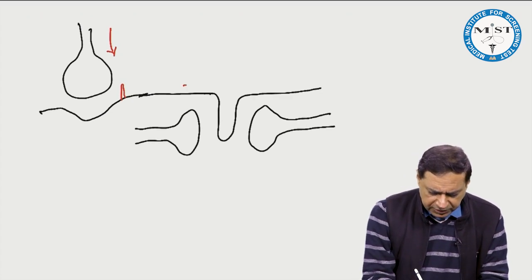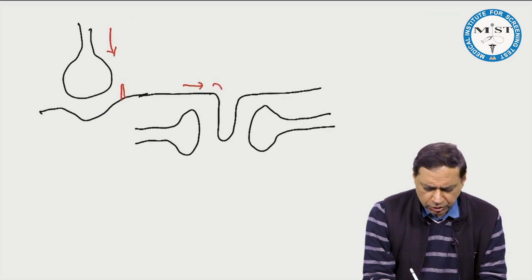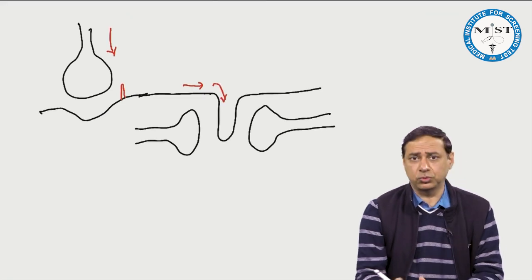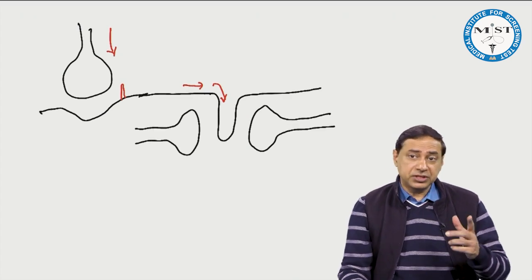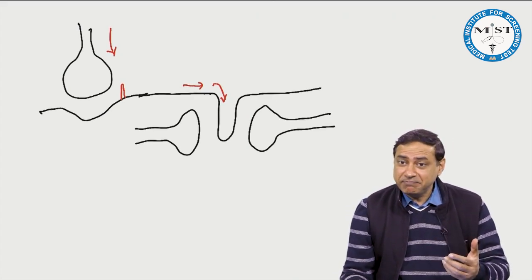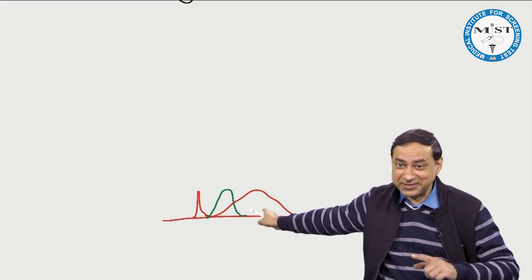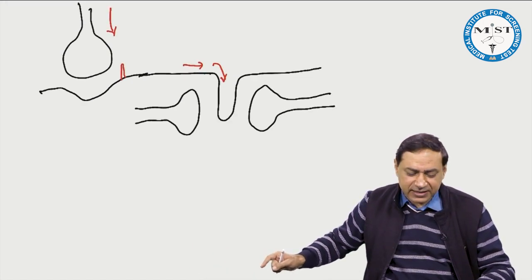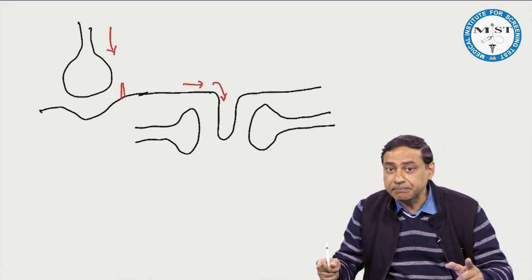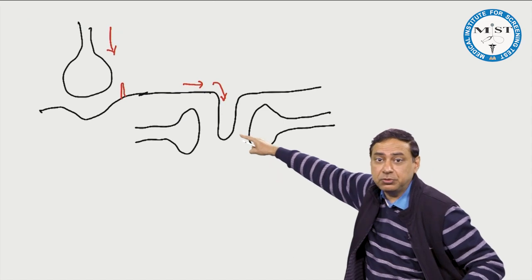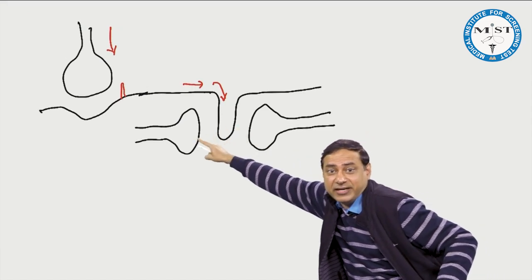The action potential travels on the cell membrane and goes inside the T-tubule as well. This will lead to the release of calcium — the calcium which causes the contraction. So, from where does the calcium come? It comes from the T-tubule or from the cistern.